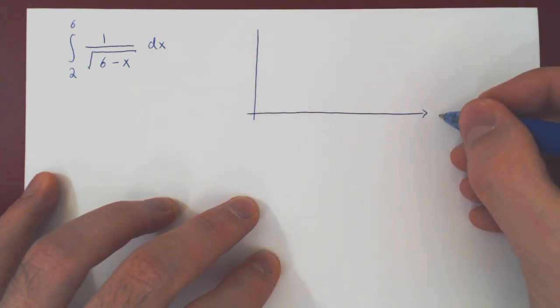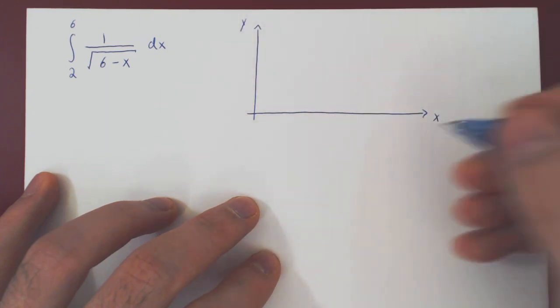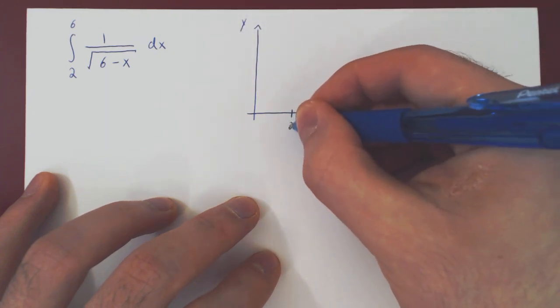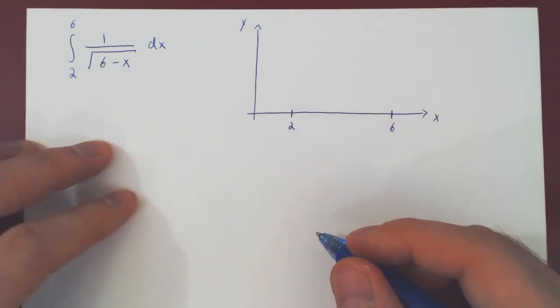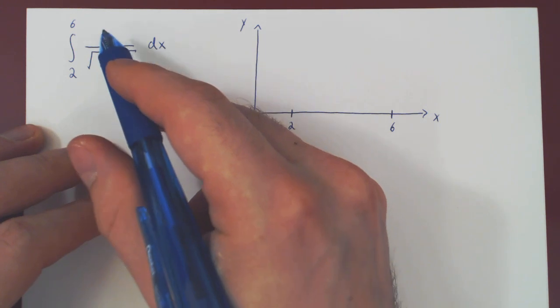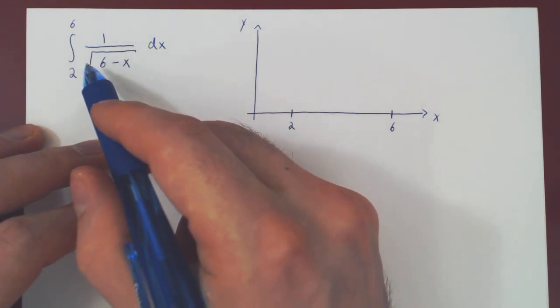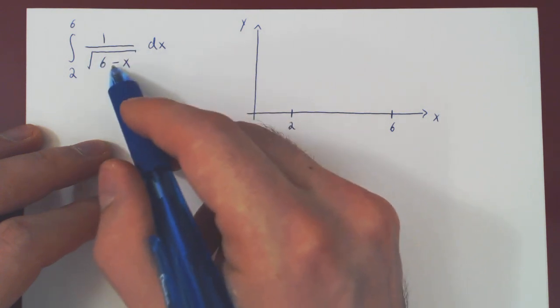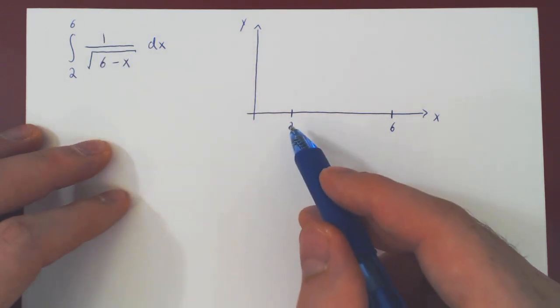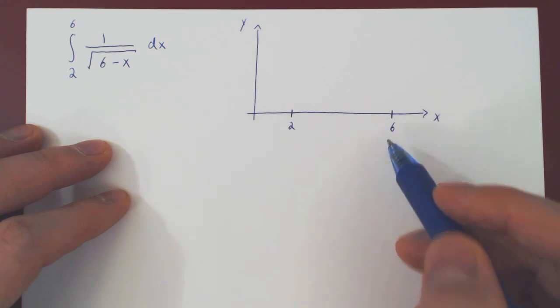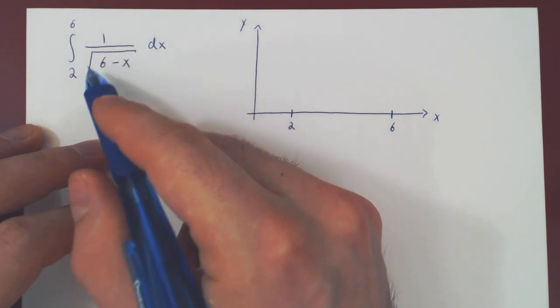So, our interval goes from 2 to 6. And let's see if we have a discontinuity. 1 over the root of 6 minus x. Well, first of all, we have to have the root of something positive, otherwise the function is undefined. But as x is never bigger than 6, 6 minus x will be positive, and so the function is defined.